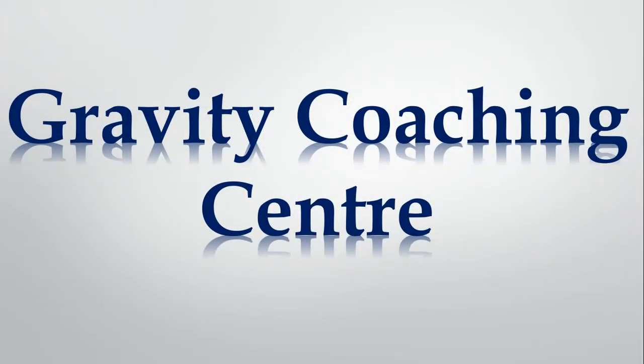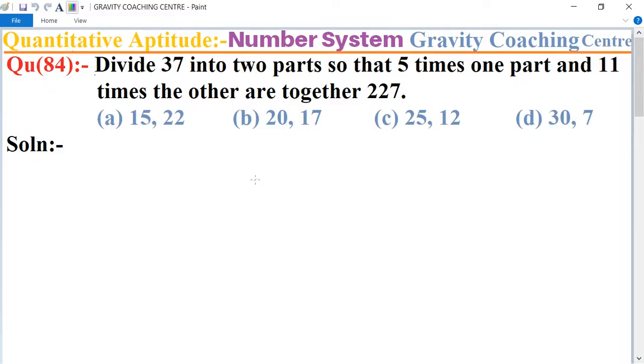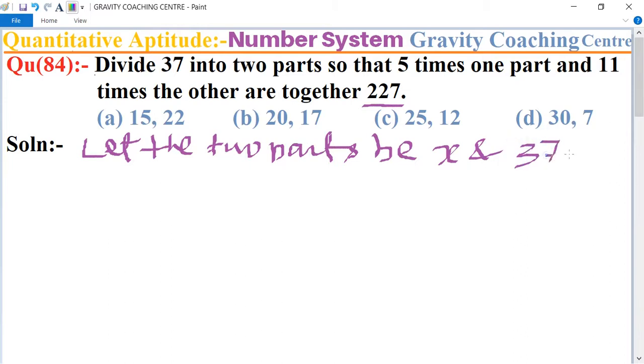Welcome to our channel Gravity Coaching Centre. Divide 37 into two parts so that five times one part and eleven times the other are together 227. So first of all, let the two parts be x and 37 minus x.